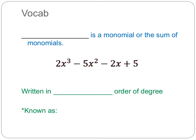As with most of these, we're going to have some vocabulary that we'll be focusing on throughout the video. The first thing we're going to discuss is what we consider a polynomial. We defined polynomial in our last video, but we're going to look at another definition. A polynomial is a monomial, or a single term, or the sum of monomials.